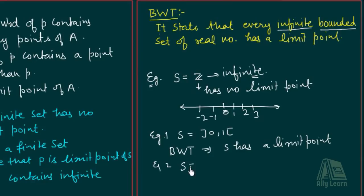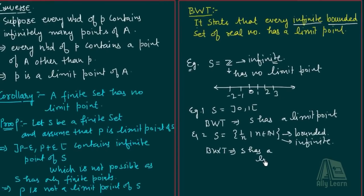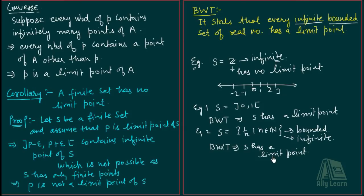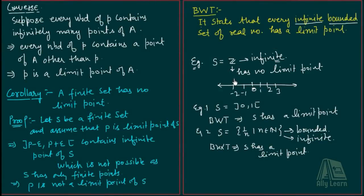Let's consider one more example. Let S = {1/n : n belongs to N}. Dekho, yeh bounded bhi hai kyunki koi bhi element 1 se bada nahi hoga aur 0 se chhota nahi hoga. Aur har ek natural number ke liye ek point hoga, so infinite bhi hai. So bagair limit point evaluate kiye, hum Bolzano-Weierstrass theorem se keh sakte hain that S has a limit point. Ab dekho Z infinite set tha lekin bounded nahi tha, so uske paas koi bhi limit point nahi tha.